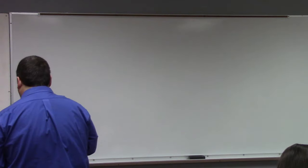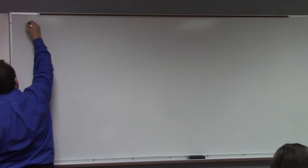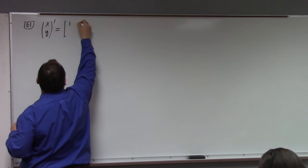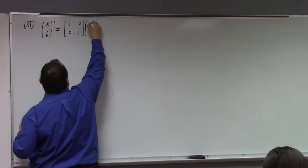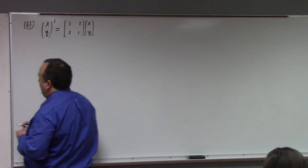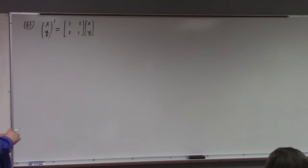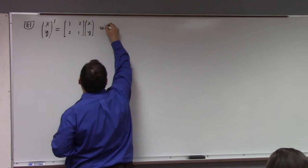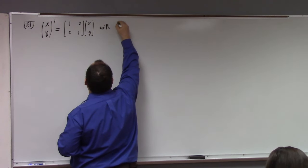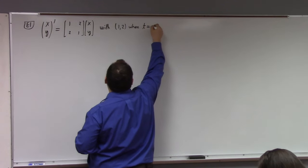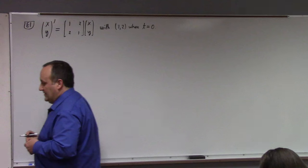Last time I set up a problem but didn't solve it. The system was: [x, y]' equals [1, 2; 2, 1] times [x, y]. I'd like to show you how to solve this with the eigenvector technique. I'll even add an initial condition: the solution passes through (1, 2) when t equals 0.